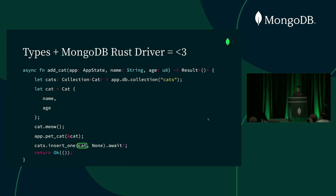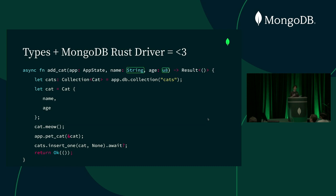In addition to making our code more ergonomic, it also makes it more correct. When we created the cat, the Rust compiler required that we provide both the name and age fields — we couldn't accidentally forget one. Additionally, it made sure we provided the correct types. We couldn't accidentally provide a name that wasn't a string or an age that wasn't an integer. This ultimately means it's impossible for this handler to accidentally insert something into our database that violates our schema, which is really important for avoiding headaches caused by inconsistent data.